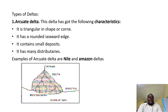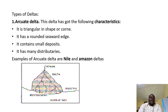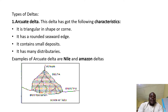This delta has a rounded sea edge — the edge that enters the sea is round. This delta contains small deposits; the materials that form this delta are small in size. It has many distributaries, small deposits, and a rounded seaward edge. It is triangular in shape.